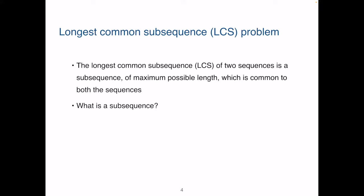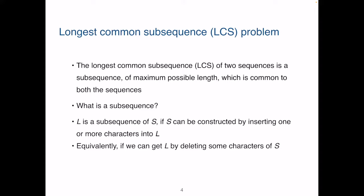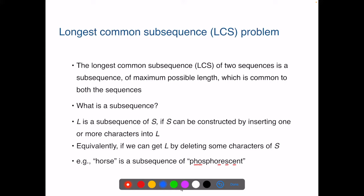The LCS of two sequences is a subsequence of maximum possible length, which is common to both the sequences. What is a subsequence? Note that it does not have to be consecutive letters. Formally, we say L is a subsequence of S if S can be constructed by inserting one or more characters into L. Or equivalently, we can say we can get L by deleting some characters of S.